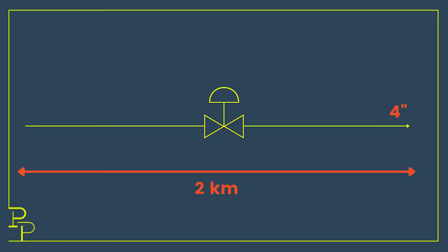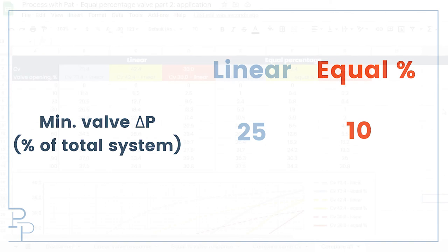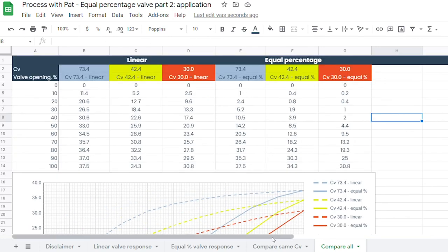This is where we use equal percentage valves: when the system we are working on has a large pressure drop — for example a very long pipeline — we use equal percentage valves to smooth out our installed characteristic and get a linear response from our controller. A typical rule of thumb is that if you are installing a linear characteristic valve, as a minimum that valve should represent 25% of the total system pressure drop. If you are installing an equal percentage valve characteristic, the valve should as a minimum have 10% of the total system pressure drop. These rules of thumb exist to get you as close as possible to a linear response without knowing anything about your system. The sheet I use to do all these calculations and generate all these plots can be found in the link in the description.